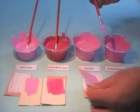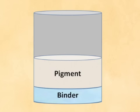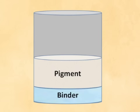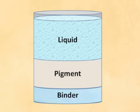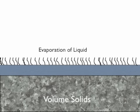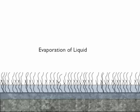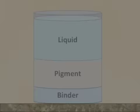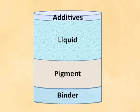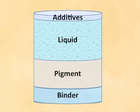Volume solids are the parts of the paint that are still present in the coating when it dries. To clarify: binders and pigments are the two components of paint that make up the dry film thickness and may be referred to as the volume solids of that paint. The liquid part of the paint is also called a vehicle, as it carries the binder to the surface until it dries. The liquid evaporates, allowing the drying process to start. Cheaper paint will have more liquid and less volume solids, while quality paint will have more volume solids and less liquid.